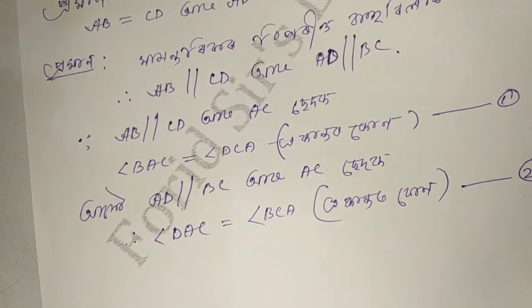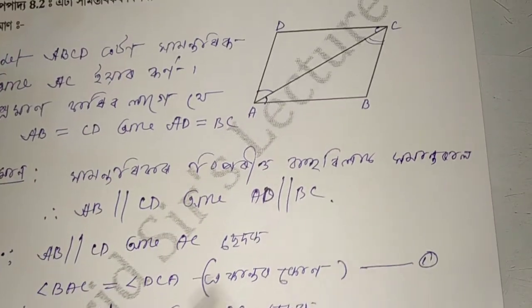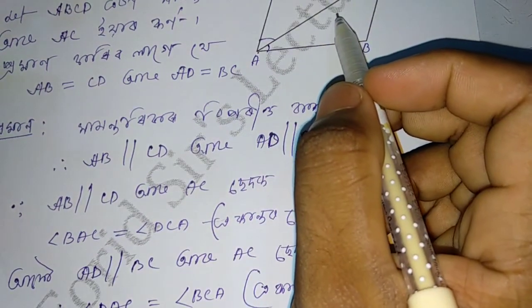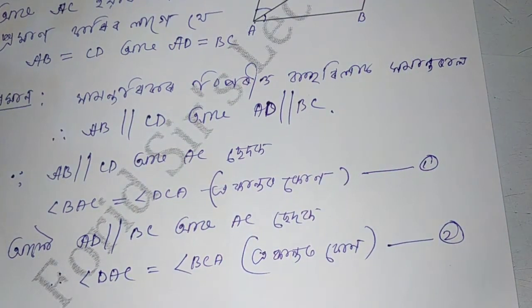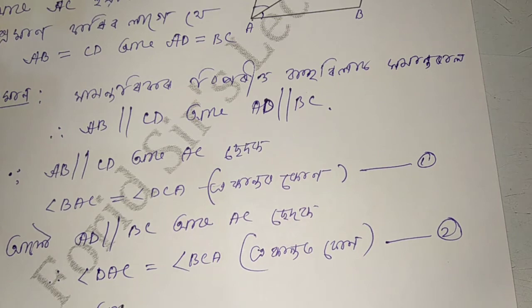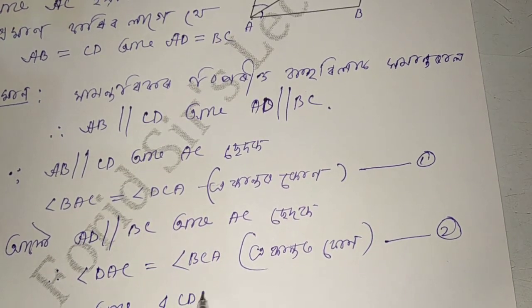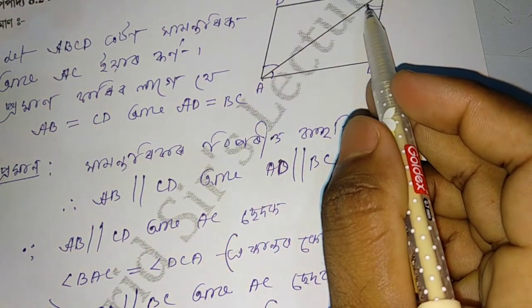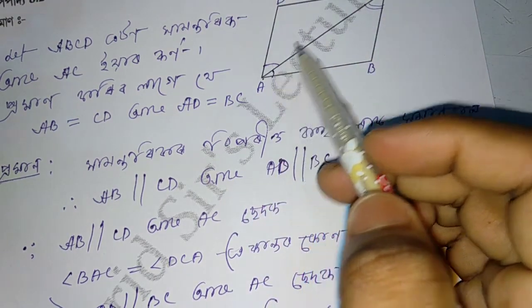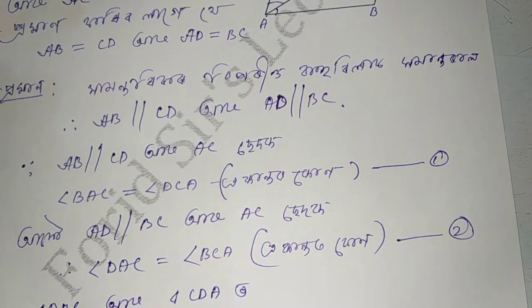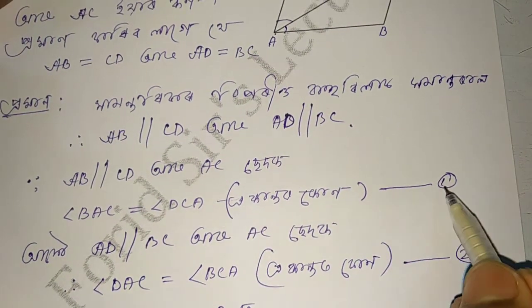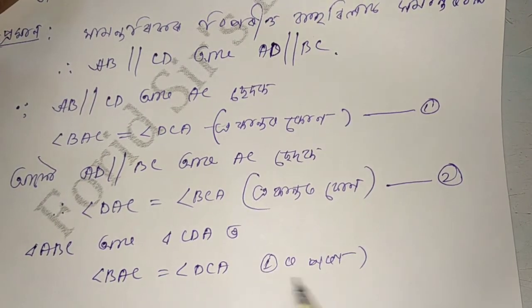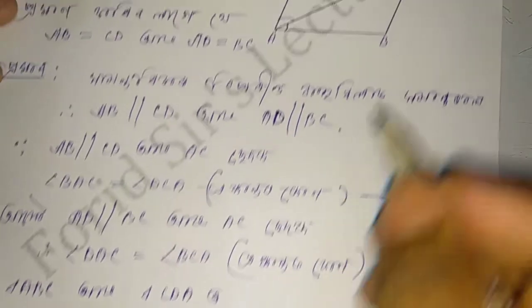Number two: triangle ABC congruent to triangle CDA. The three were along ABC congruent to CDA. Keep support: angle BAC equal to angle DCA. One or problem one — I keep on the data, three was A.